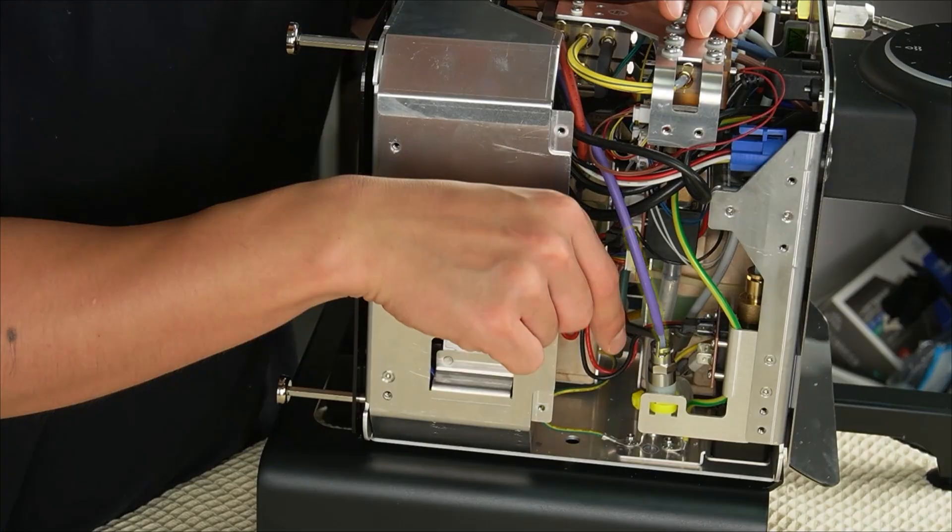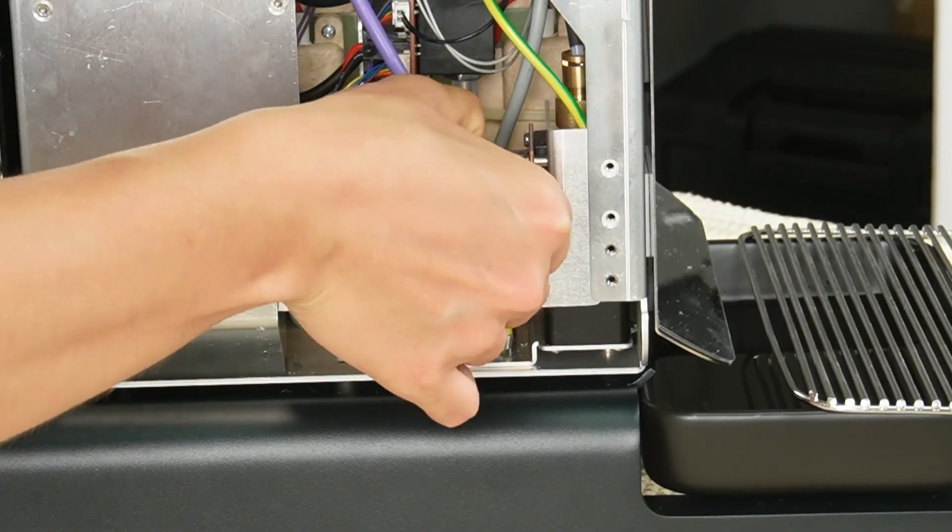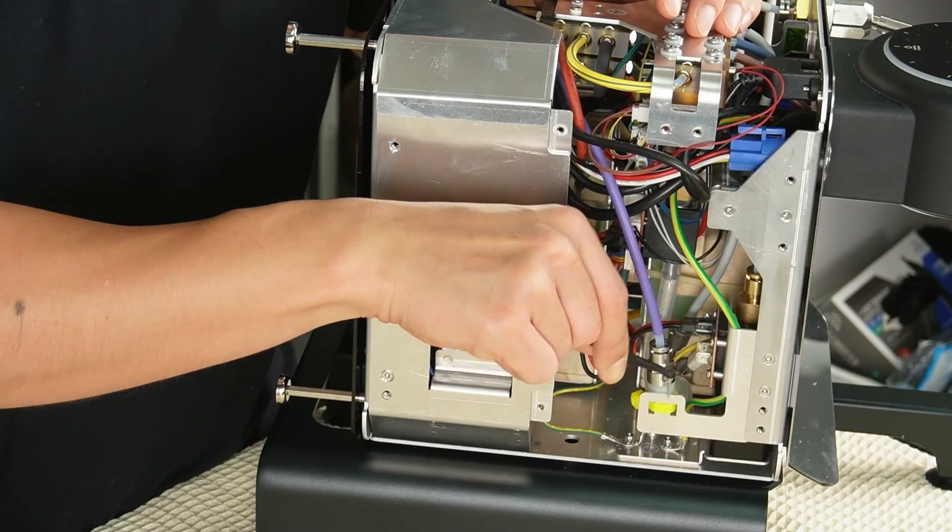Next, remove the clip from the purple tube connector and pull out the tube. Use your fingers or angled pointy tip tweezers.